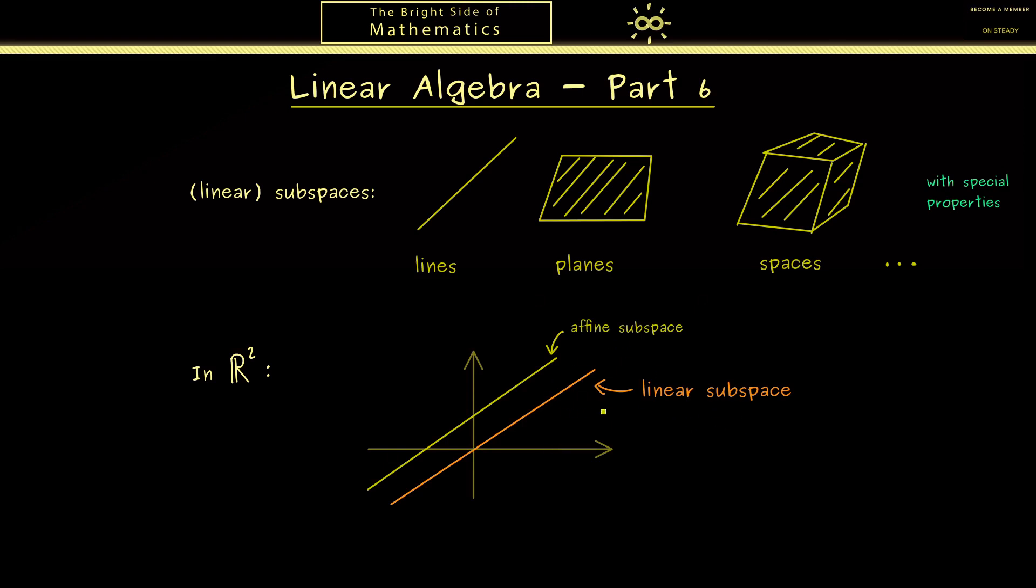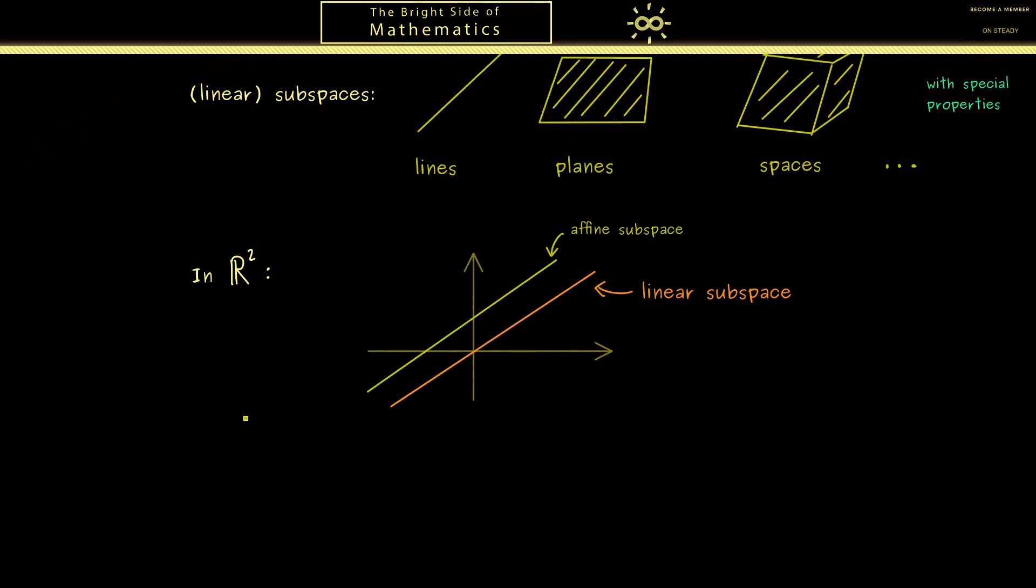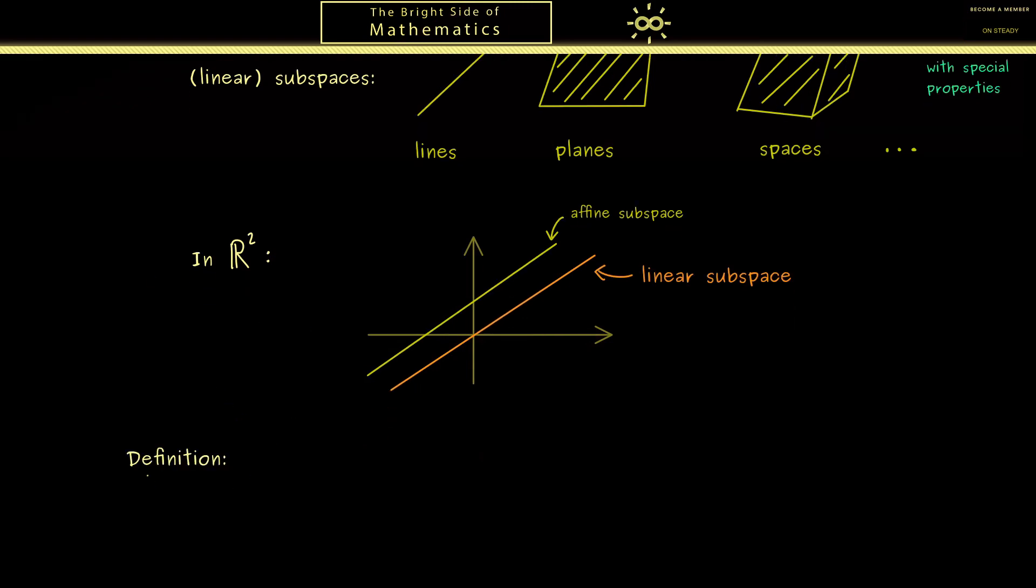However, in order to understand them you first have to understand linear subspaces. And indeed such a line through the origin is a typical example for a subspace. Therefore I think now we are ready for the definition. So here the starting point should be our vector space Rⁿ.